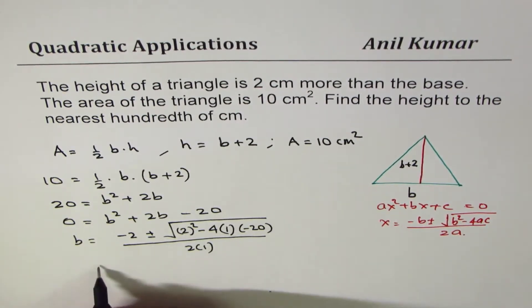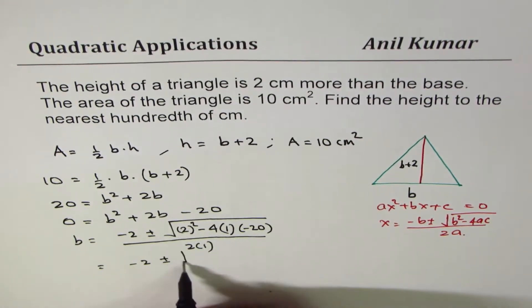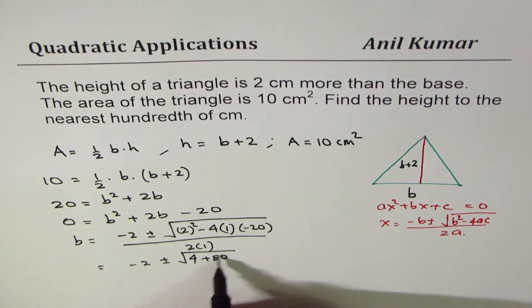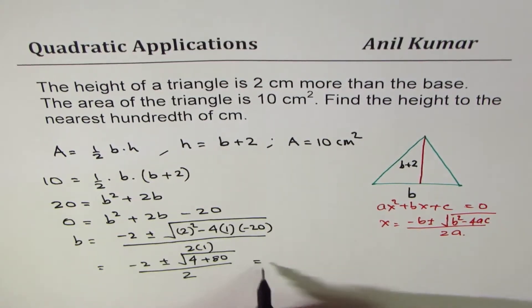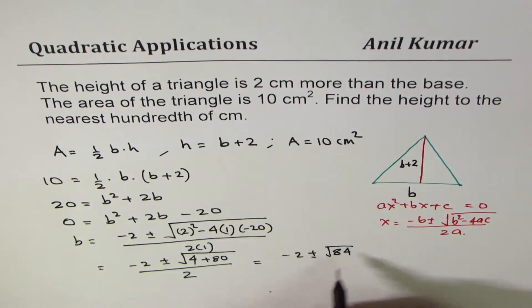So that is how you get your quadratic formula. So you get minus 2 plus minus square root of 4 minus minus becomes plus 80 divided by 2. So at this stage we get two solutions. The one which is negative is not valid.